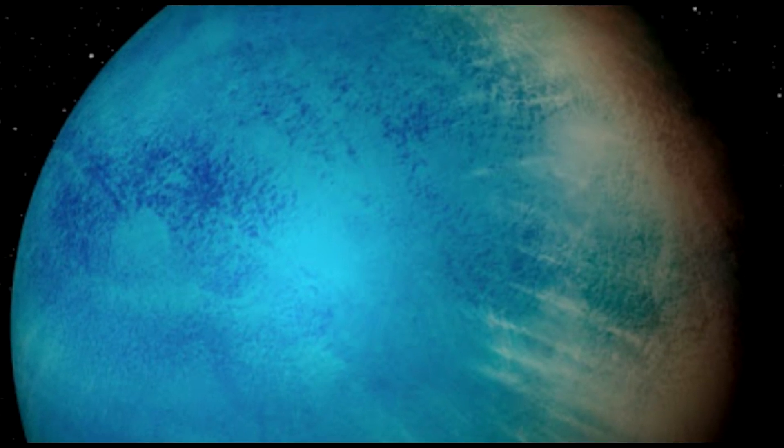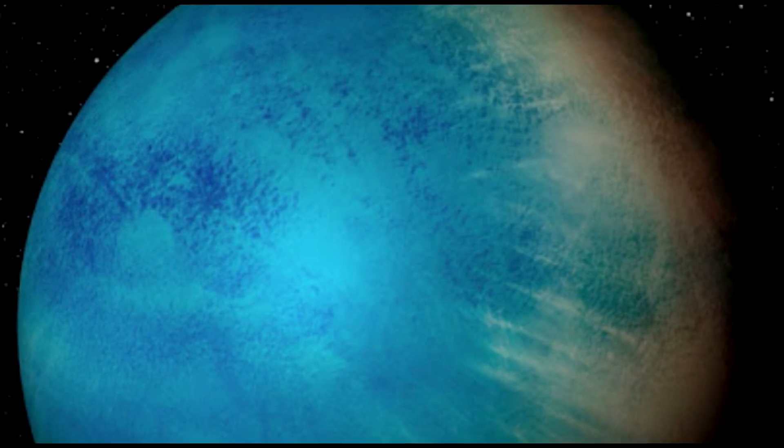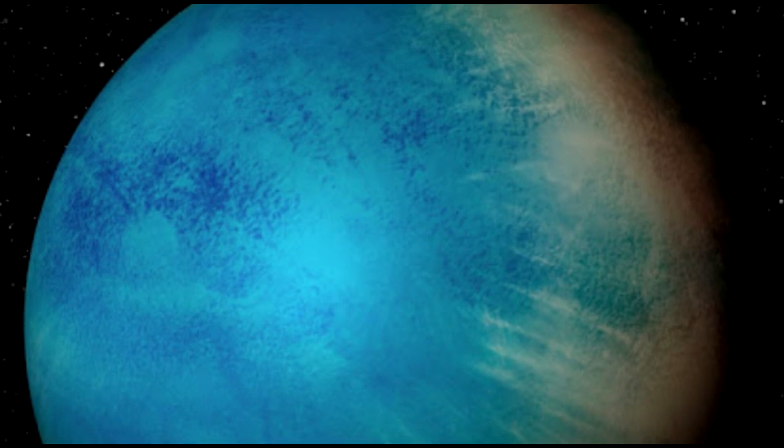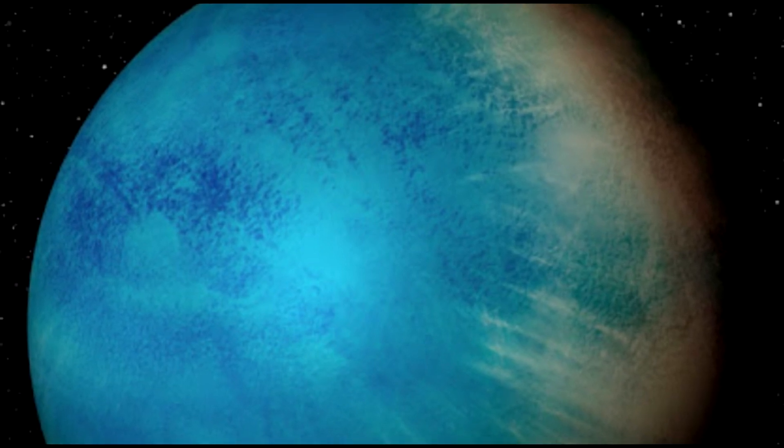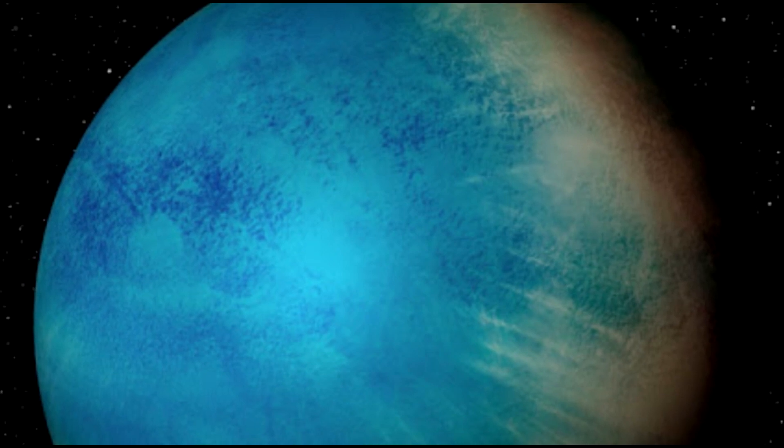TOI-1452b is one of the best candidates for an ocean planet that we have found to date, said Cadoux. Its radius and mass suggest a much lower density than what one would expect for a planet that is basically made up of metal and rock, like Earth.